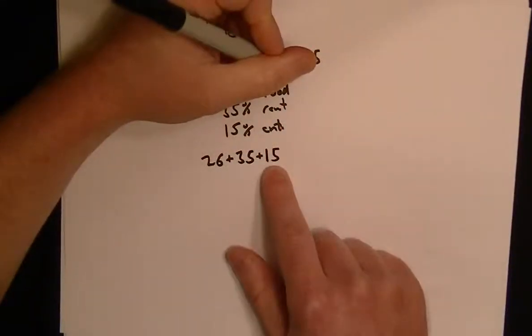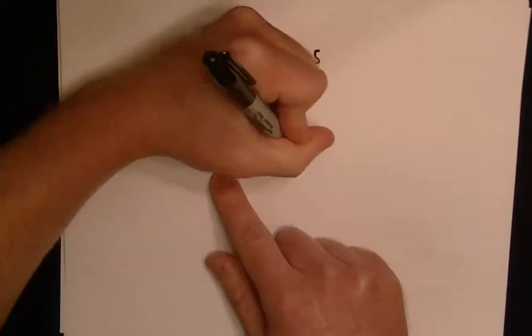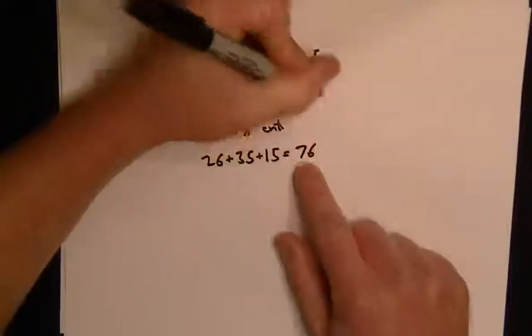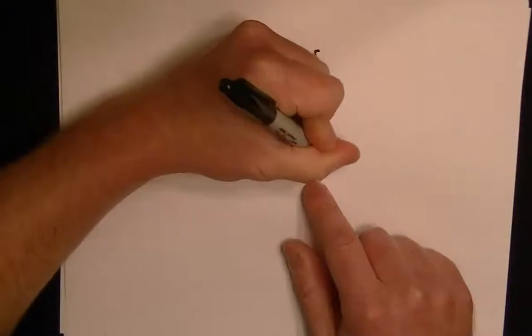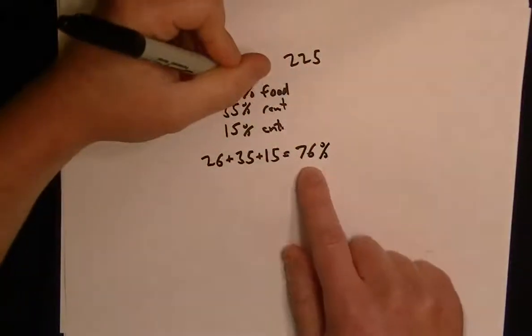So this is 35 plus 15 is 50, plus 26 is 76. So all this stuff here is food, rent, and entertainment. It makes up 76% of his earnings.